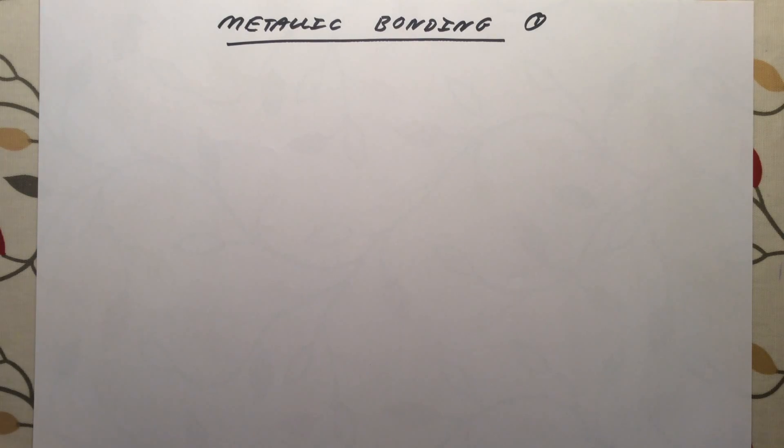In this video, we are going to look at the final type of bonding that you need to know about for your GCSE exam, and this is metallic bonding. We've covered ionic bonding, the transfer of electrons, and covalent bonding, sharing pairs of electrons between atoms. But neither of those are able to explain how metals are held together.